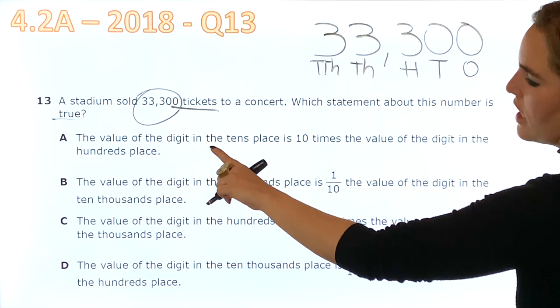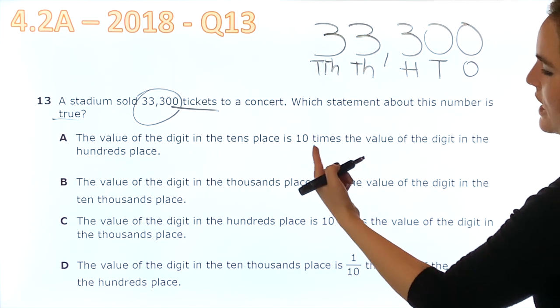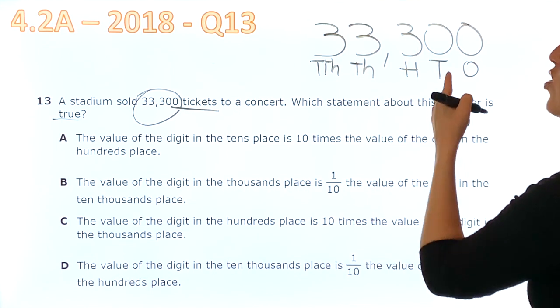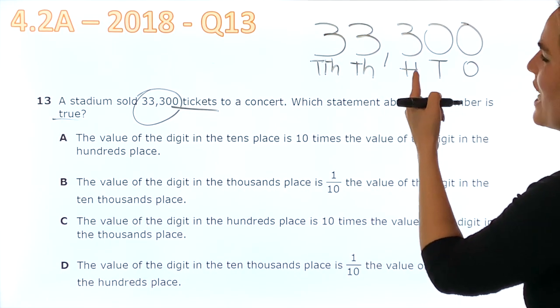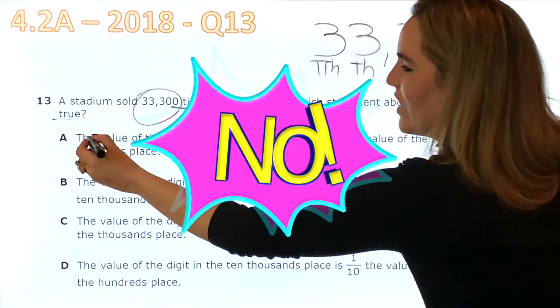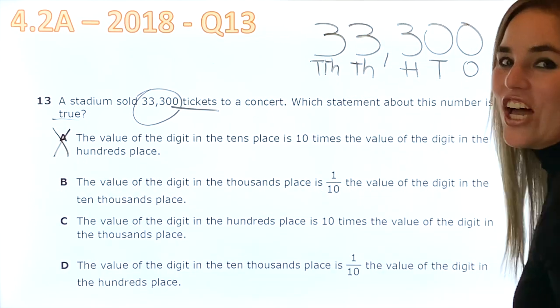The value of the digit on the tens place, this one, is 10 times the value of the digit on the hundreds place. Do you think that zero is 10 times 300? Absolutely no, it's not A.